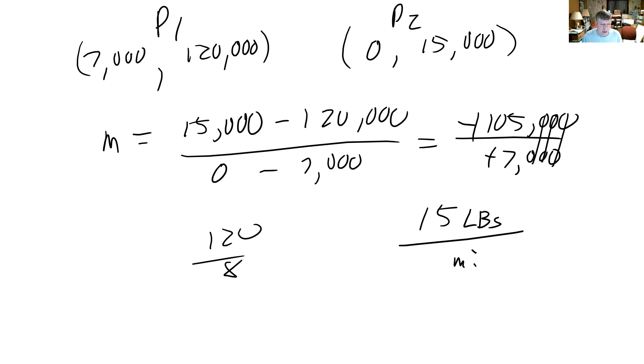The ordered pairs—the first one I used, (7,000, 120,000), was correct. But this one, I wrote as (0, 15,000). That's incorrect.